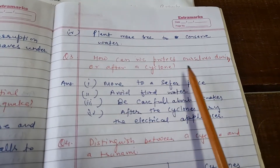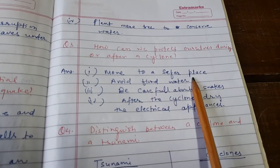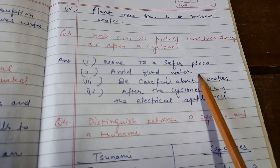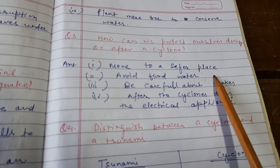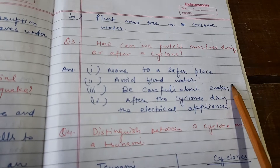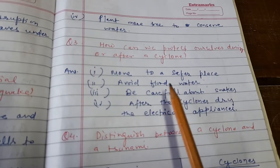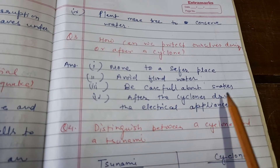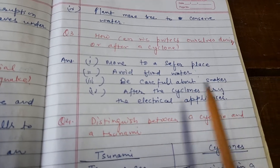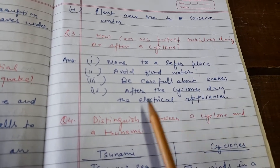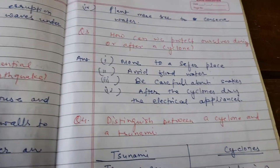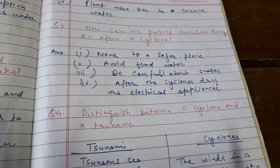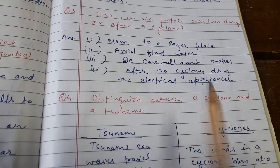How can we protect ourselves during or after a cyclone? Move to a safer place. Avoid flood water. Be careful about snakes. After the cyclone, dry electrical appliances that may have been soaked by rainwater.